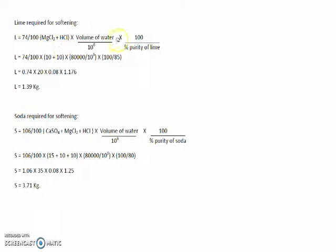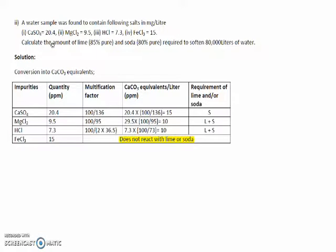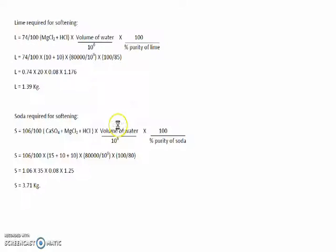Using the revised formula: L = (74/100) × [CaCO₃ equivalents of MgCl₂ and HCl, which consume lime] × 80,000 / 10⁶ × 100/85 (lime is 85% pure). Put the values and get the answer. Similarly calculate the quantity of soda using 80% purity for soda.